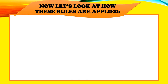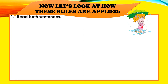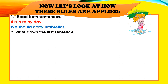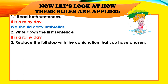Now let's look at how these rules are applied. Read both sentences. In this case our two sentences are: "It is a rainy day." and "We should carry umbrellas." Write down the first sentence: "It is a rainy day." Replace the full stop with the conjunction that you have chosen. In this case we have chosen the conjunction "therefore". So it will read: "It is a rainy day, therefore".